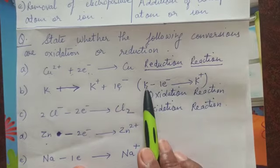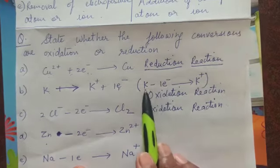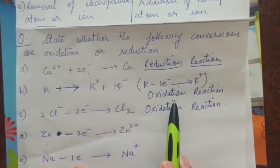That means here again, potassium atom is losing 1 electron and loss of electron is oxidation.